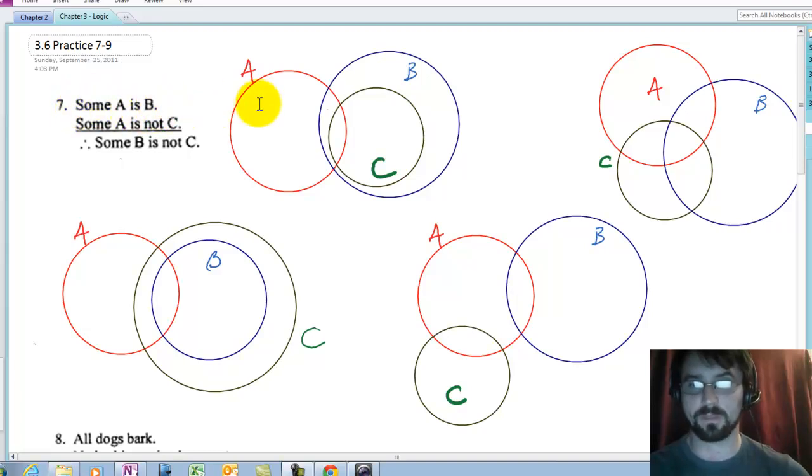It says some A is B, so you can see I overlapped A and B in every single one of my circles, and I'm going to put this in here.